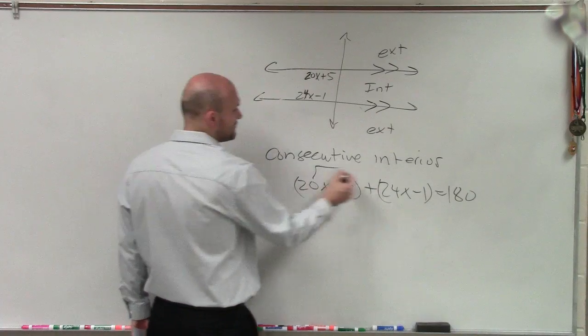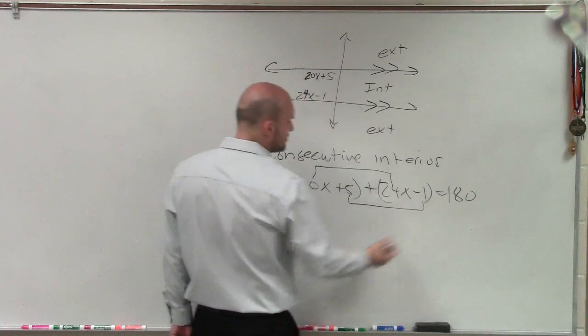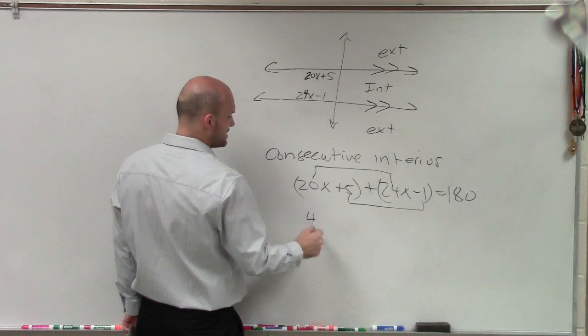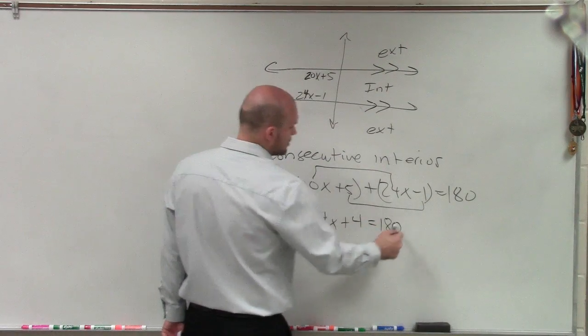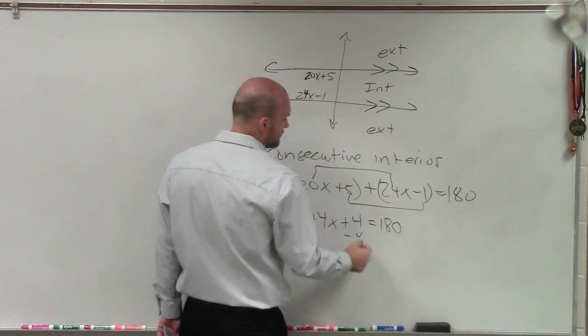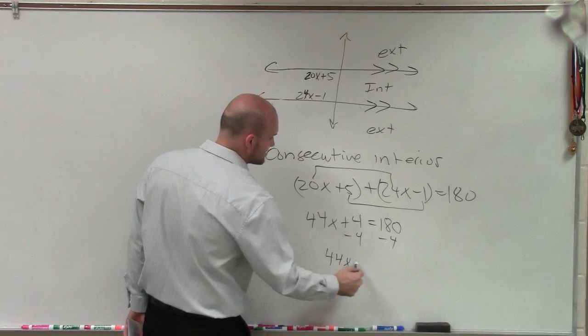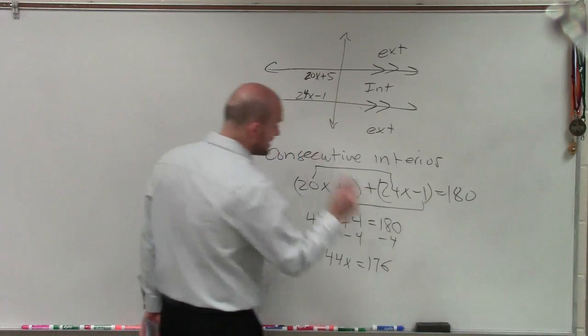So therefore, now you add these. You can combine like terms here and combine like terms here. So therefore, that is 44x plus 4 equals 180. Subtract 4, subtract 4. 44x equals 176.